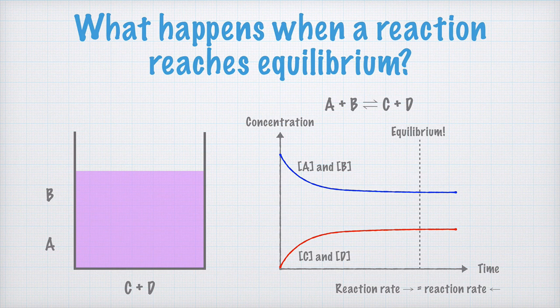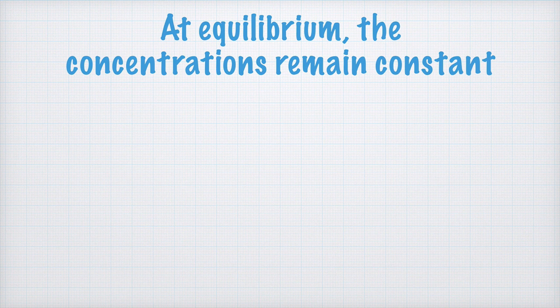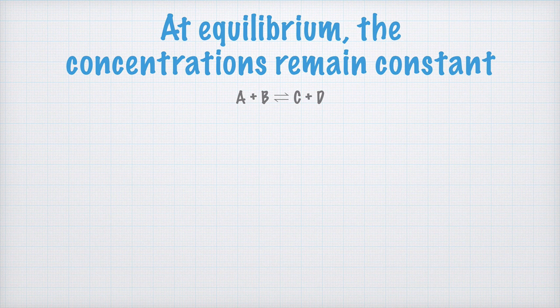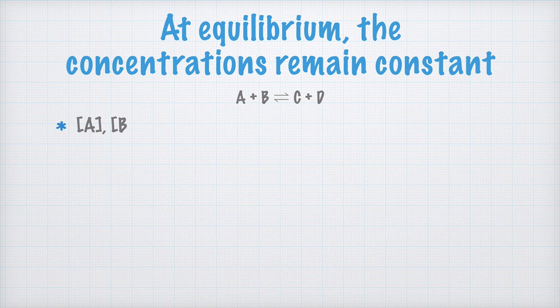So at equilibrium, the concentrations of the substances remain constant. We have this chemical reaction, A plus B is in equilibrium with C plus D, and at equilibrium, the concentrations of A, B, C and D have stopped changing.